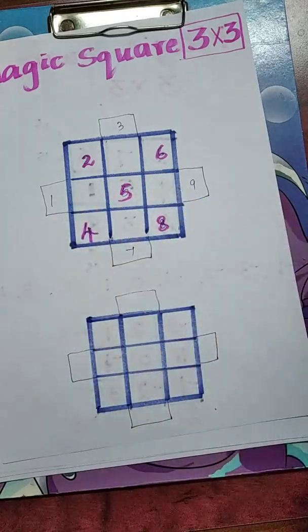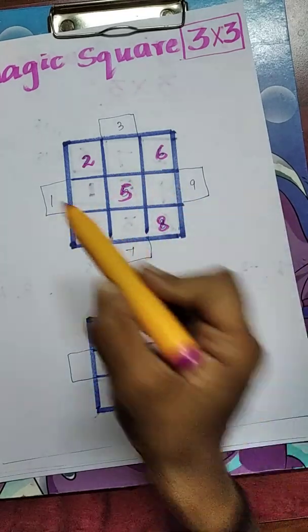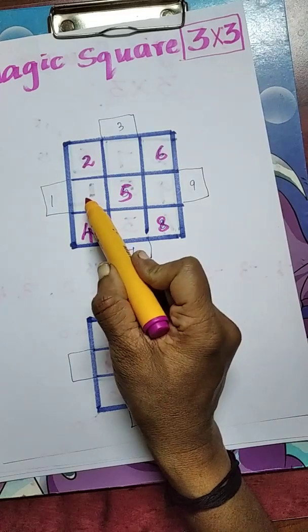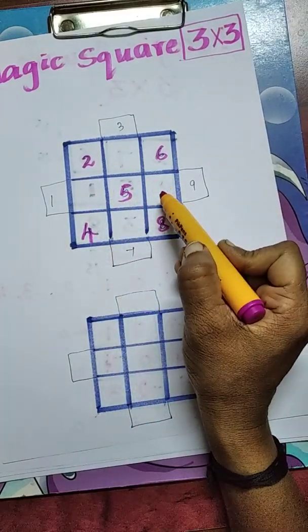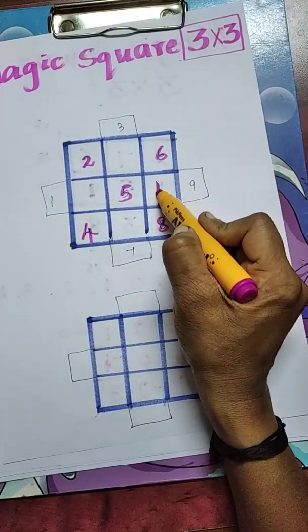How to fill? We will see. First, 1. Avoid the adjacent box and go to the next box. There we can write 1.